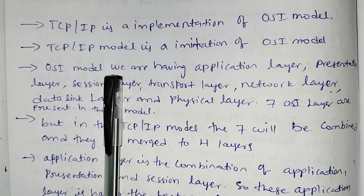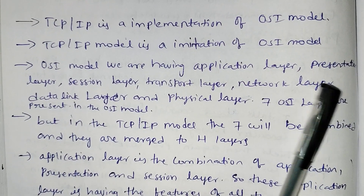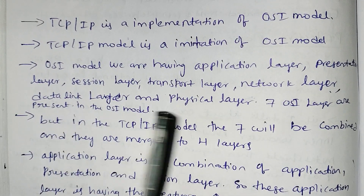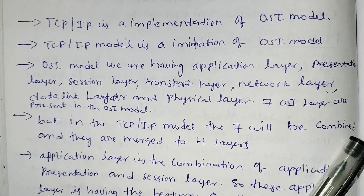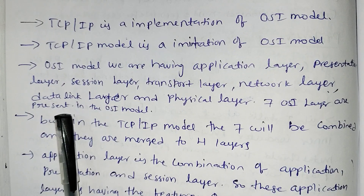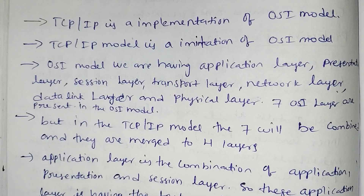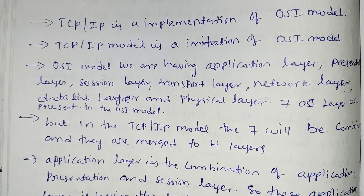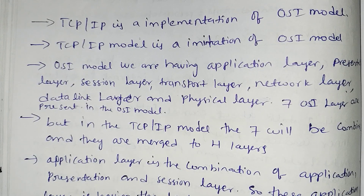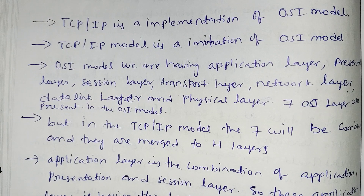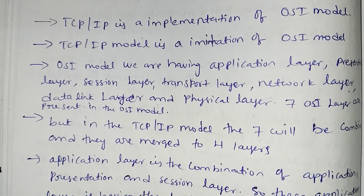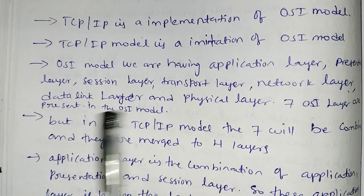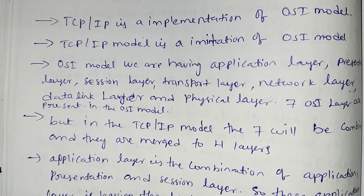In the OSI model, the layers are: application layer, presentation layer, session layer, transport layer, network layer, data link layer, and physical layer — 7 layers in total.